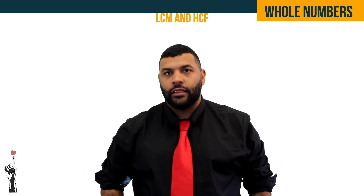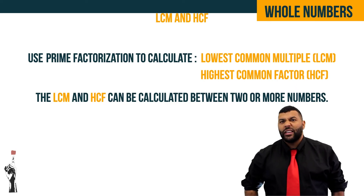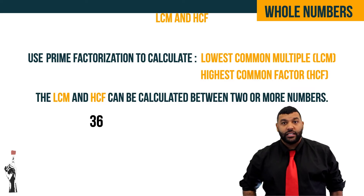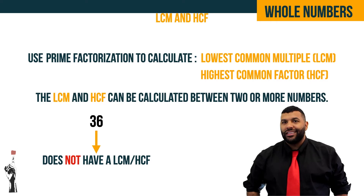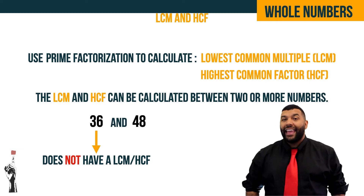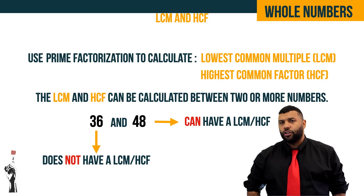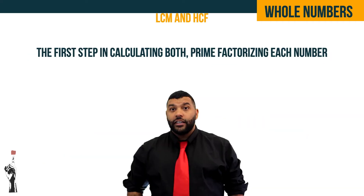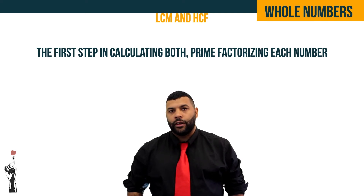Prime factorization is key to calculating the LCM and the HCF of any two numbers. The LCM and the HCF are only calculated between two or more numbers. So a single number, say 36, does not have an LCM or HCF. But 36 and 48 can have an LCM and an HCF. The first step to calculating an HCF or an LCM is to prime factorize both numbers.